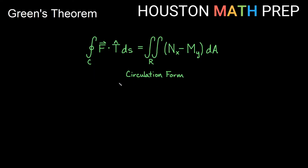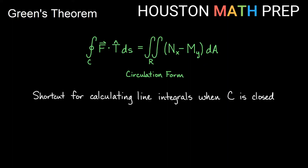Here I've got the circulation form of Green's Theorem that says the integral over a closed curve — remember this round symbol on our integral means we're integrating over a closed curve — f dot T-hat ds, that's going to be equal to the double integral of partial N_x minus partial M_y dA. This is a shortcut for calculating line integrals when C is a closed curve, like a circle, a square, a triangle, or an ellipse.